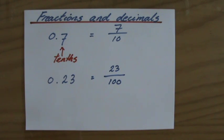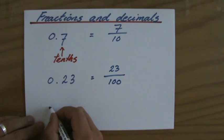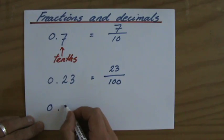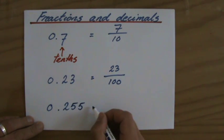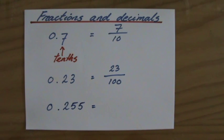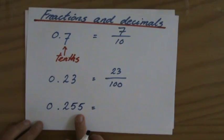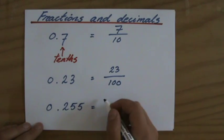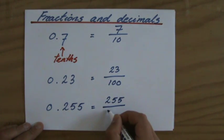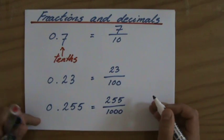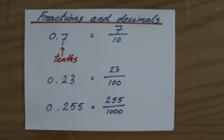And let's do one more: 0.255 equals - again, place value. What is the place value of those decimals? Those are tens, hundreds, thousands. And how many thousands do I have? I have 255 thousands, so 255 over a thousand.